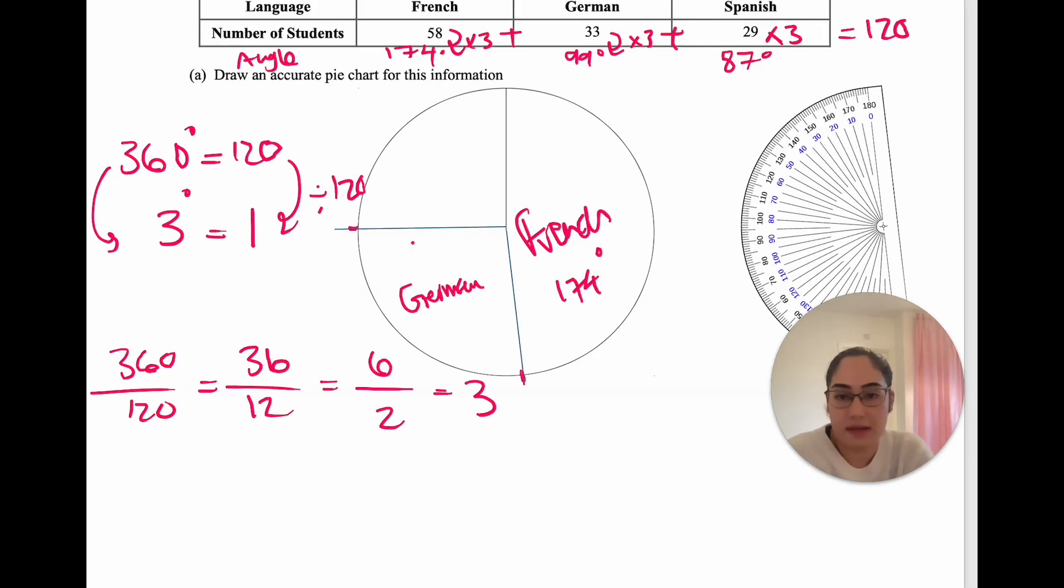What remains, if you measure with the protractor again, place your 0 here and measure from 0 all the way here, should be 87 degrees, which is represented by Spanish. And that's how you would draw a pie chart. Hope that makes sense.